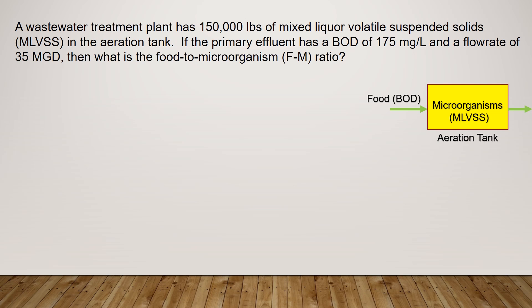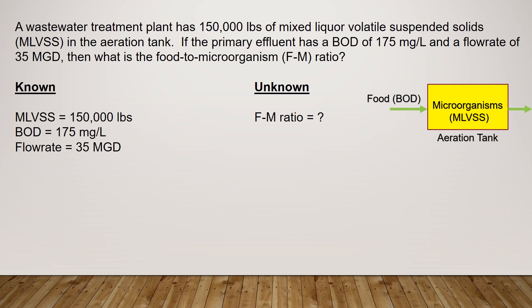The FM ratio is simply the ratio of the food or the BOD to the MLVSS. First, let's write down all the knowns and the unknown. We were given the MLVSS, the BOD, and the flow rate. And for the unknown, they want to know the FM ratio.